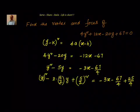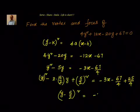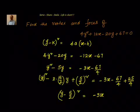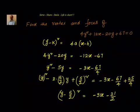So it will become -67/4 + 25/4 on the right side. Now we know that (y - 5/2)² = -3x + (-67 + 25)/4 = -3x - 42/4, which is nothing but -3x - 21/2.